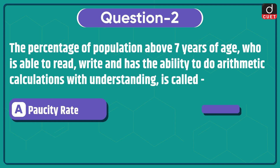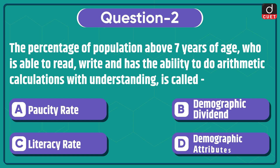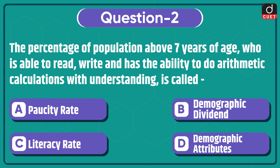Next question: the percentage of population above 7 years of age who is able to read, write, and has the ability to do arithmetic calculations with understanding is called — paucity rate, demographic dividend, literacy rate, or demographic attributes? The correct answer is option C, literacy rate.